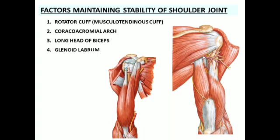There are several factors which maintain the normal position of the shoulder joint. The main thing to remember is the rotator cuff muscles. The rotator cuff consists of four muscles: supraspinatus, infraspinatus, and teres minor posteriorly, and subscapularis anteriorly. The tendons of all four muscles fuse with the fibrous capsule of the shoulder joint before getting inserted to the greater tubercle.